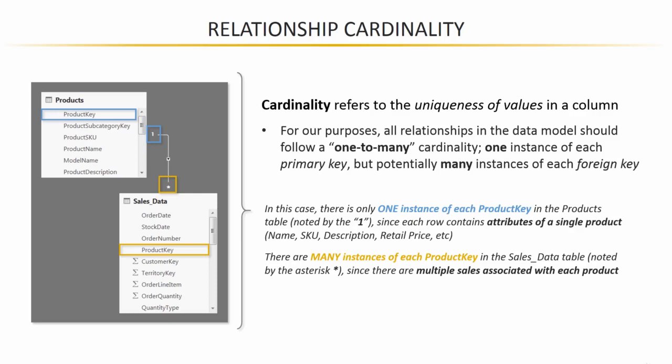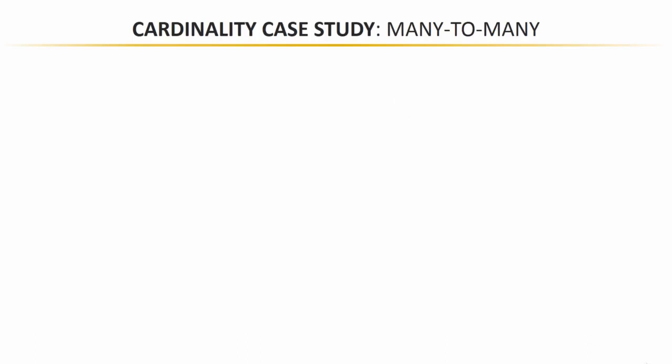The other types of cardinality that we're trying to avoid are many-to-many or one-to-one. I thought it would be helpful to put a little case study together for each of those two to show you why we'll be using one-to-many relationships instead.